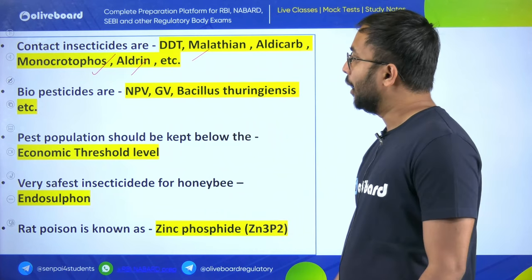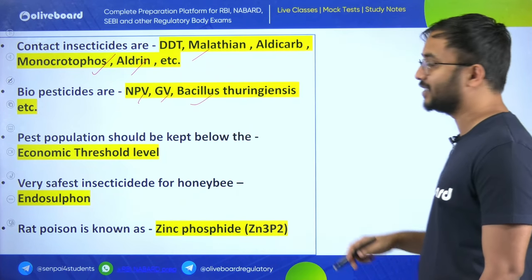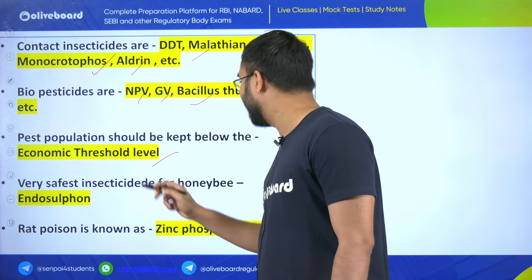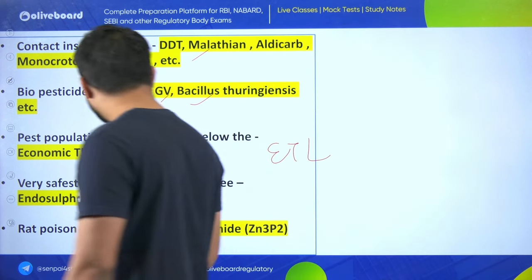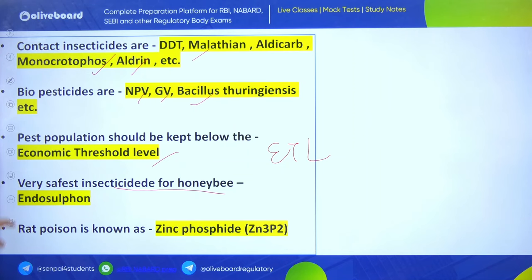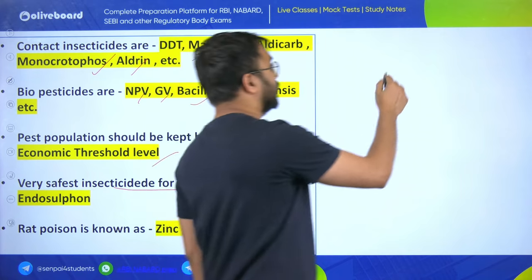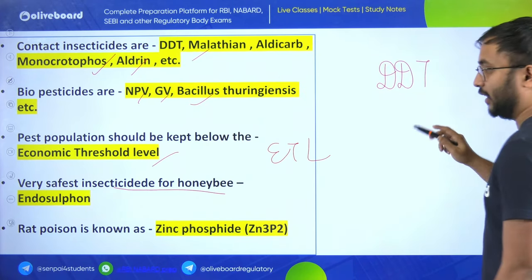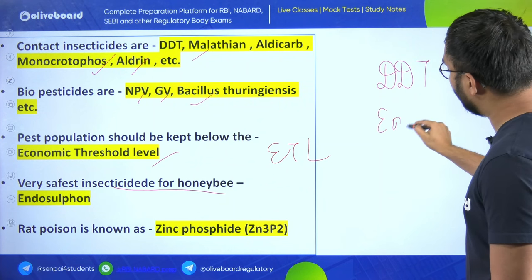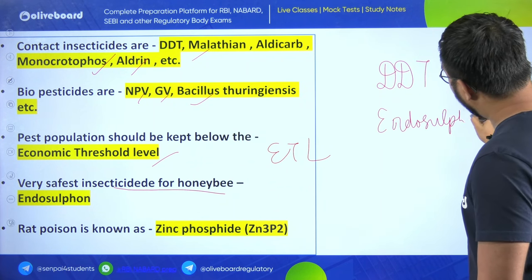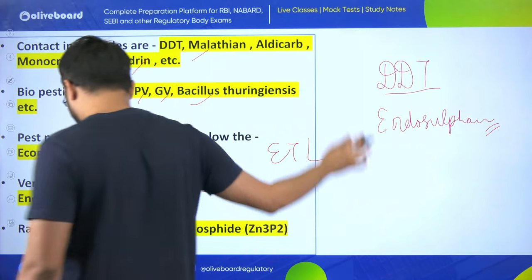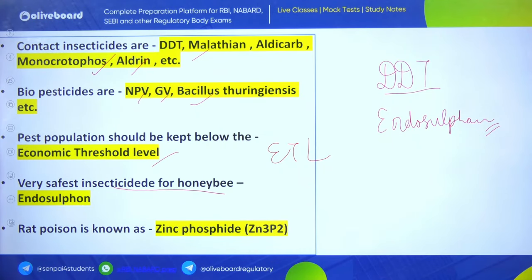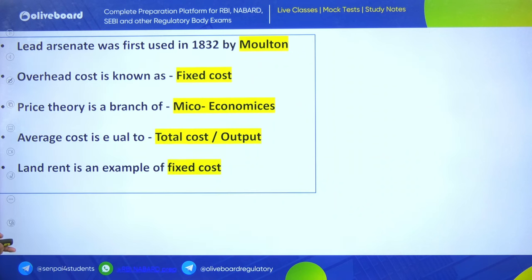Biopesticides are NPV, GV, Bacillus thuringiensis, etc. Pest population should be kept below the Economic Threshold Level (ETL). Very safe insecticide for honeybee is Endosulfan. Two chemicals having detrimental effect on environment are DDT and Endosulfan. Search online about the Endosulfan tragedy and elimination of vultures by DDT. Rat poison is also known as zinc phosphide (Zn₃P₂). Lead arsenate was first used in 1832 by Molton.